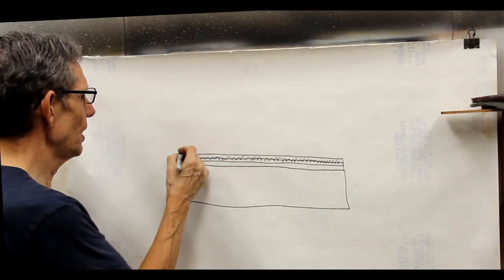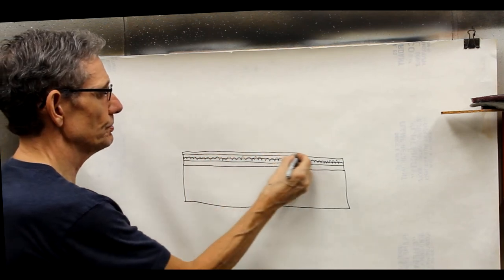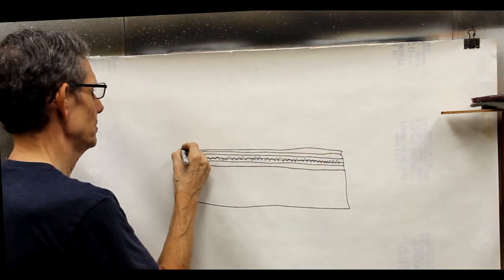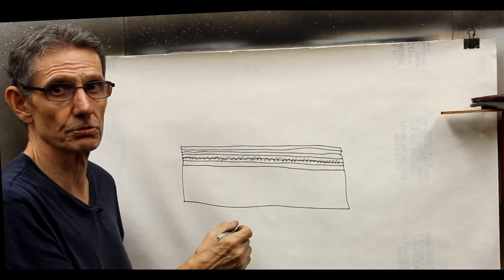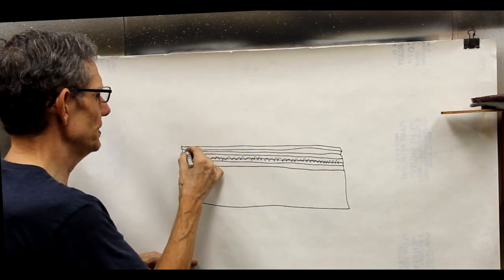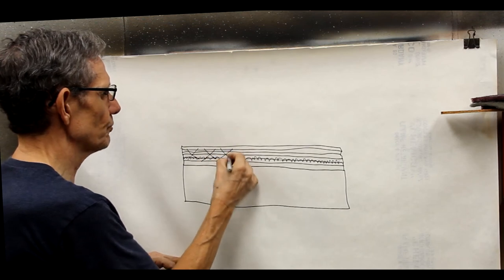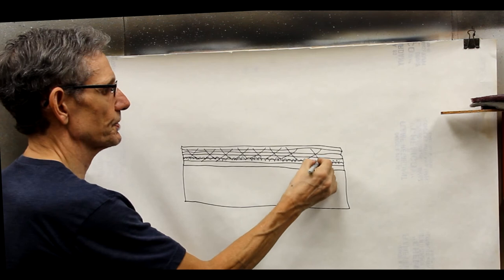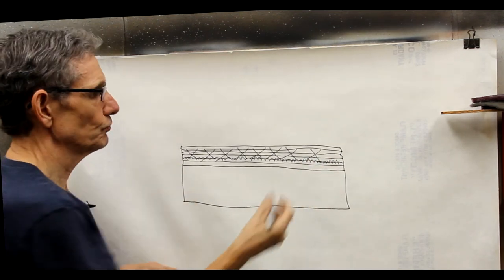So that whether you apply 3 coats, 4 coats, 5, 6, 7, or 100 coats of lacquer, there's going to be no boundary layer between those layers of finish. And that's important when you rub out.